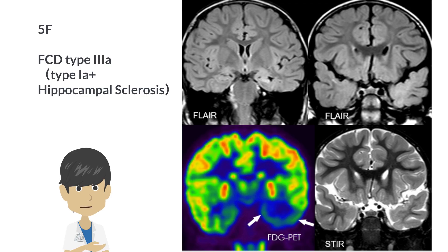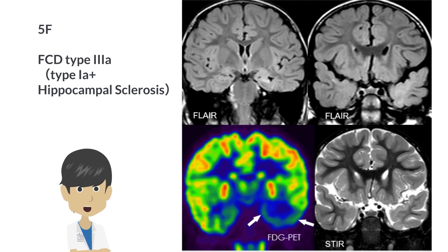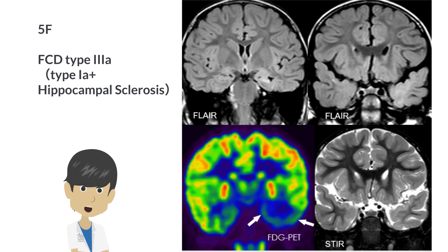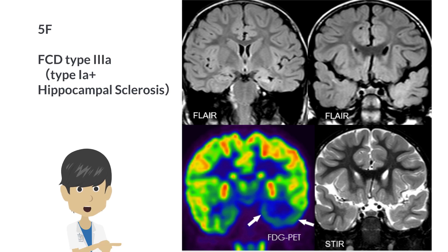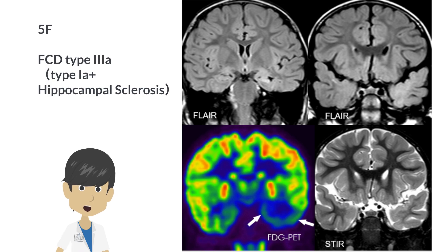A case of focal cortical dysplasia type 3a is shown. In addition to the left hippocampal sclerosis on FLAIR, there is a high signal indicating focal cortical dysplasia in the left temporal pole. FDG PET shows widespread hypometabolism from the left medial temporal lobe to the temporal base and lateral temporal cortex.